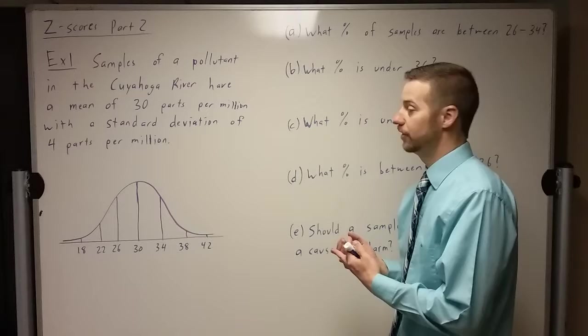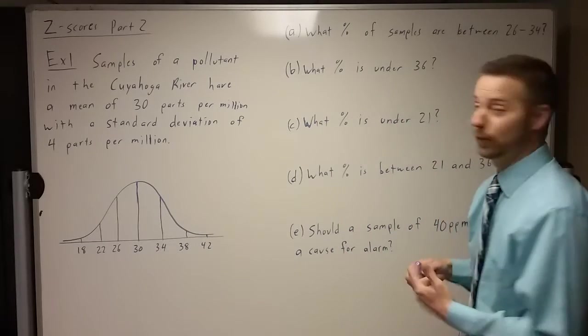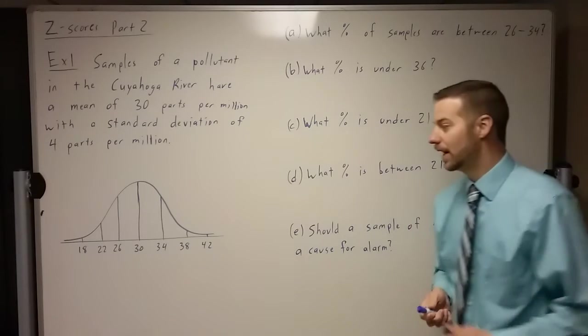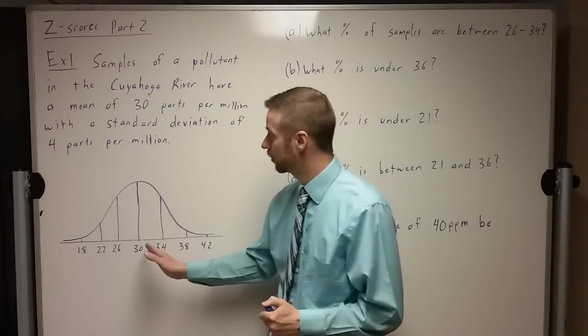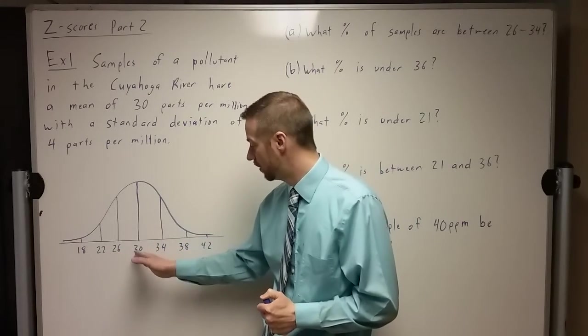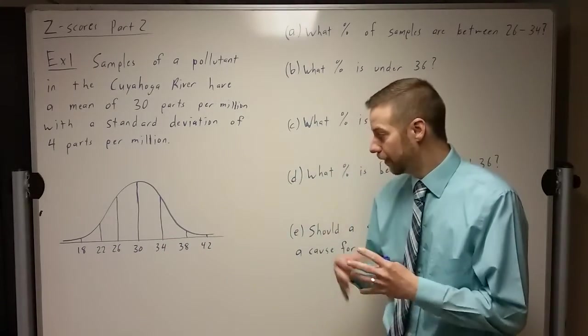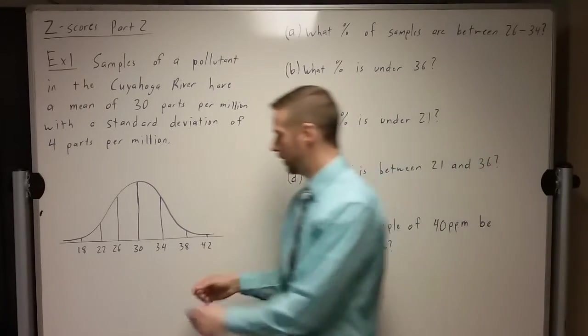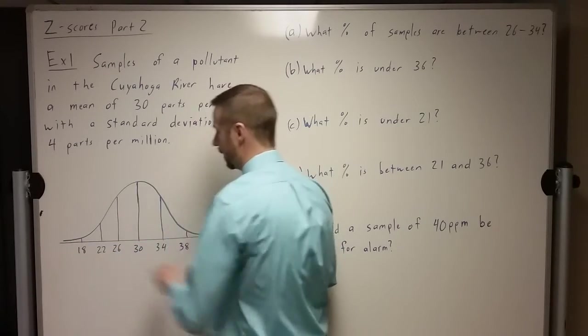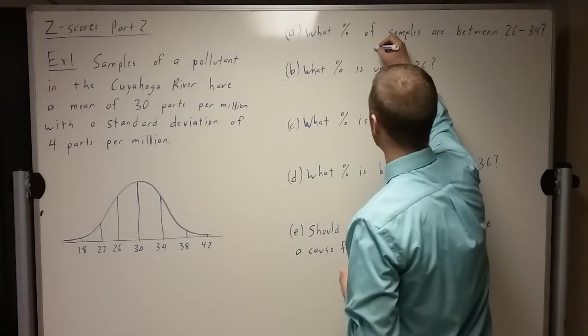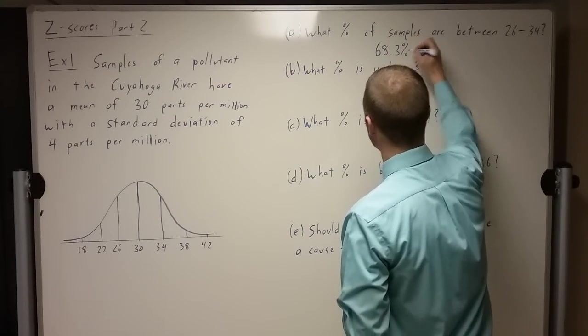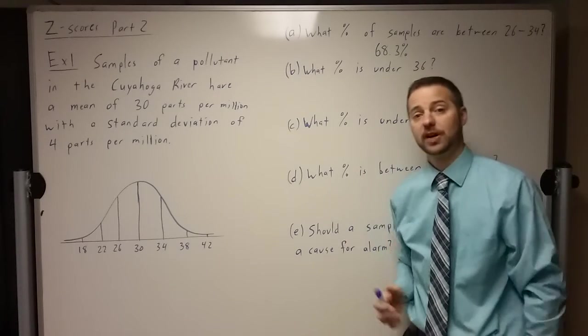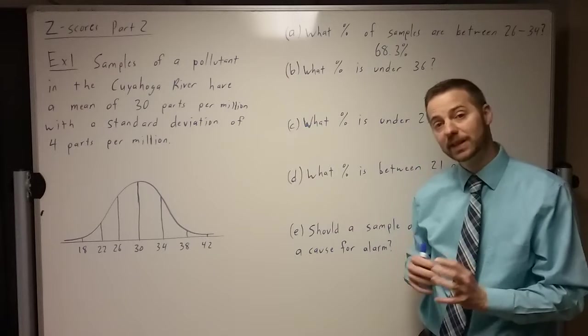So let's see if we can find some percentages. I threw in this first one as a little review here. What percent of samples are between 26 and 34? Do you notice 26 and 34 is actually just going down one standard deviation and up one standard deviation. Our little rule: one standard deviation, two standard deviations, three standard deviations. Remember we went 68.3, 95.5, 99.7. And so this is just 68.3%. No computation necessary really. Now could you do some stuff on the z-table and find that still? Yes, but we don't really need to.